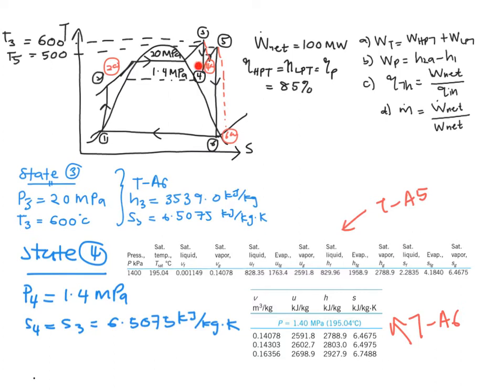It is clear that your state 4 is in a superheated region. Therefore, you will need to read from your table E6, which is your superheated table. From your superheated table at 1.4 MPa, there is no exact value of S4. You will have in a range of 6.4975 and 6.7488.